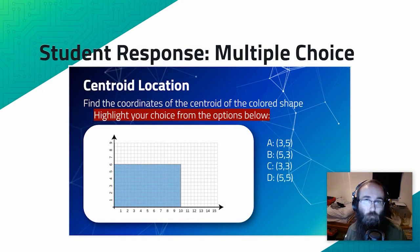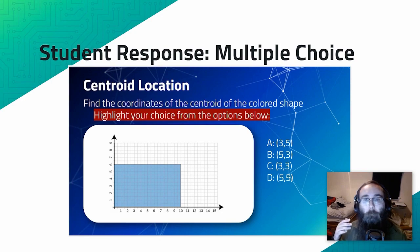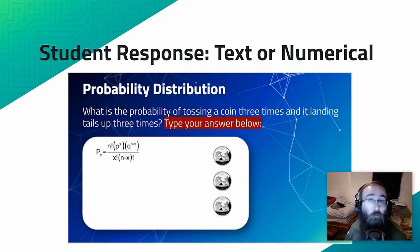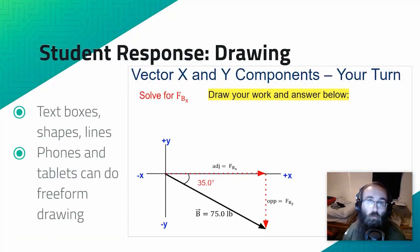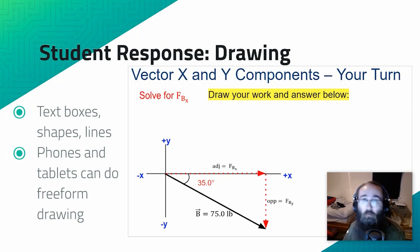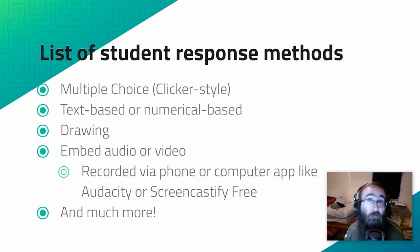In this example from the centroids notes, I included slides for students to respond to a question. Here I asked them some multiple choice questions, but consider alternative methods of response. You can ask students to do things like text or numerical-based response, like this example from the probability notes. You can ask students for drawing, like in the force vector notes here. These can use things like text boxes, shapes, lines, or freeform drawing. Students who don't have a tablet input for their computer could use a phone as a touch screen for drawing. You can also ask students for audio or video using the same embed tools. Students' phones are fully capable of recording audio or video and could even use computer apps like Audacity or Screencastify Free. Just make sure students have fixed the links to any files uploaded to their Google Drive.